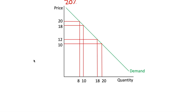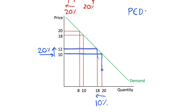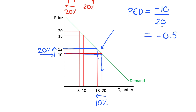Going back to our straight line demand curve: if we start at a price of 10 and increase our price by 20% up to 12, using this demand curve we can see that this causes a decrease in quantity demanded of 10%. Running through the numbers, the PED at this point is minus 10 divided by 20, giving a price elasticity of minus 0.5. So our large percentage change in price has caused a smaller percentage change in quantity demanded — this is inelastic.